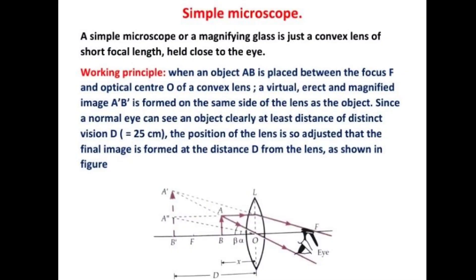The simple microscope is a very common and easily available device in our day-to-day life. It is simply a convex lens of short focal length, and we can easily observe things by holding it near to our eye. When an object AB is placed between the focus and the optical center of a convex lens, a virtual, erect, and magnified image is formed. That magnified image is A'B', formed on the same side of the lens as the object.